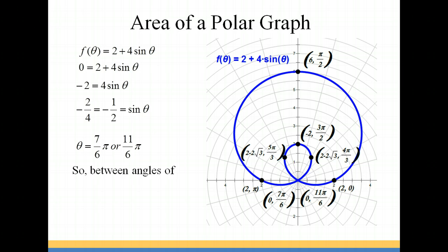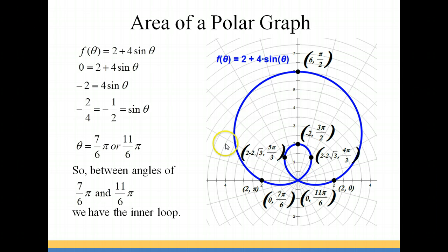So between the angles of 7π/6 and 11π/6, we have our inner loop. When we're looking at our graph, we're going to start off here where our angle measure is 0, giving the ordered pair (2, 0). Then we follow around the graph going to π/2, then to π, and then to the pole at 7π/6. We keep going around to 4π/3, 3π/2, 5π/3, and back to 11π/6, and then back to 2π, which is the same as 0.